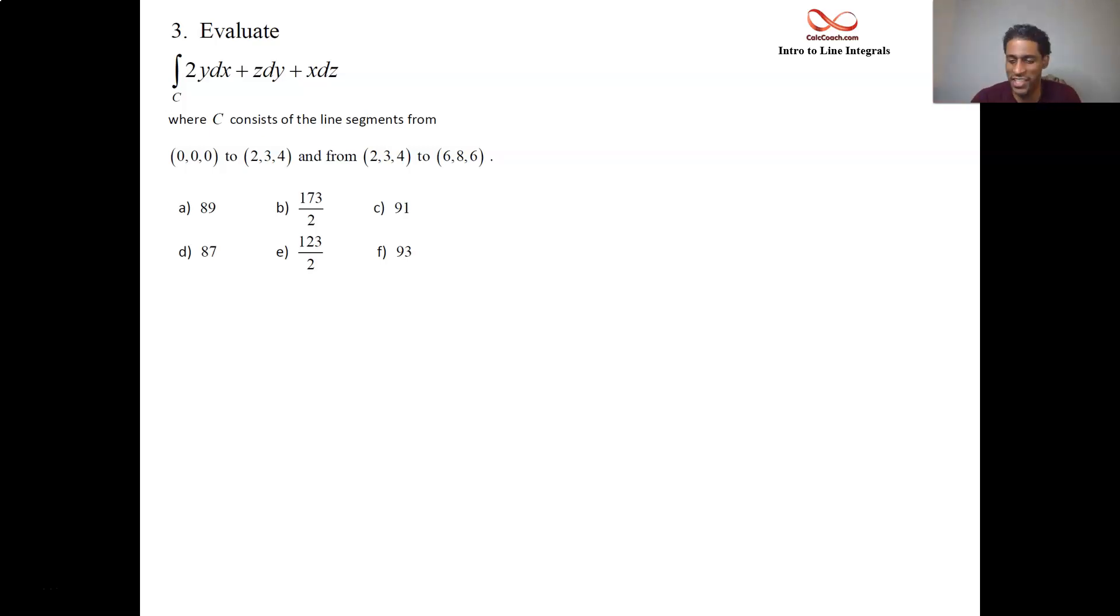The past five we just did in the previous videos were all two-dimensional. We're going to go in space from the origin to (2,3,4) in three space, and then from (2,3,4) to (6,8,6). We have the vector field, we have to figure out what the vector field is from that line integral there, and we're going to execute all the steps that we did before.